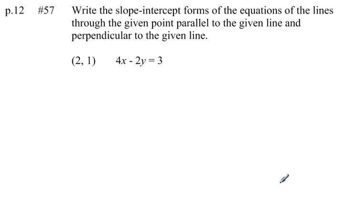Page 12, problem number 57 reads: write the slope-intercept forms of the equation of the lines through the given point parallel to the given line and perpendicular to the given line. We're actually asked to find two different things here, two different equations.